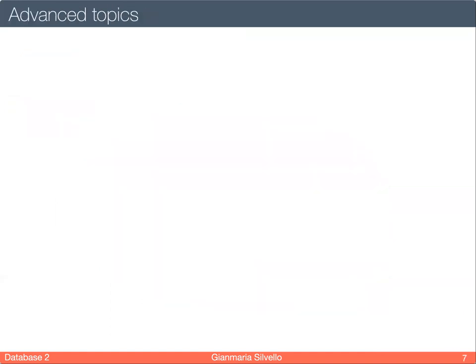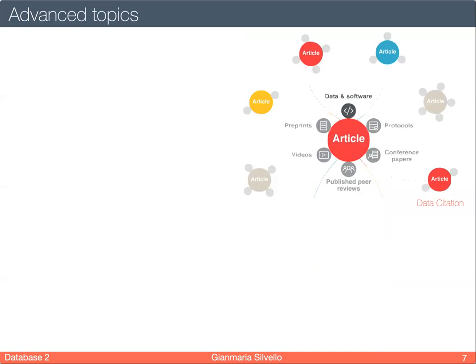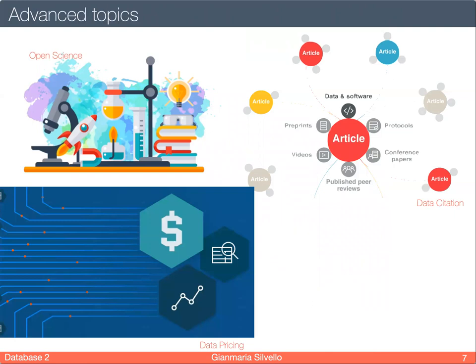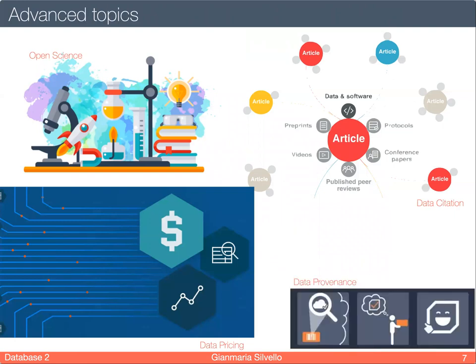We will discuss some advanced topics related to graph databases, but also to relational databases. We will discuss data citation, how to cite data and refer to data used in a scientific article. We will discuss open science and what it means and how we can achieve it. We will learn about data pricing and data provenance. These are core topics in nowadays research in databases, but also in search and other related areas.